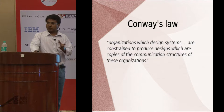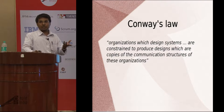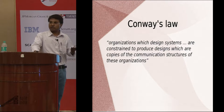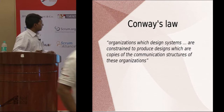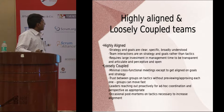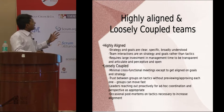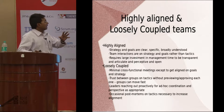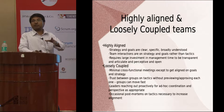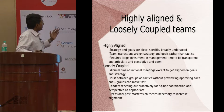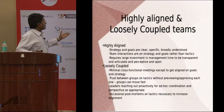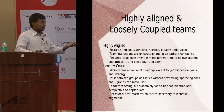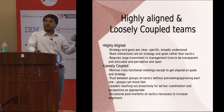Now we look at Conway's Law, which basically states that based upon how your organization is structured, that is how the system the organization designs will turn out to be — for example, three groups produce three layers in a three-tier architecture. In the Spotify model, you're looking at highly aligned and loosely coupled teams. Highly aligned means everybody is clear about the strategic goal and their role. Loosely coupled means fewer cross-functional meetings, less time interacting with other teams, and fewer dependencies.